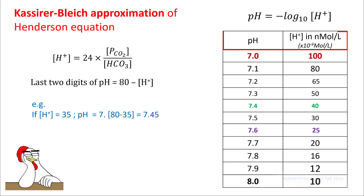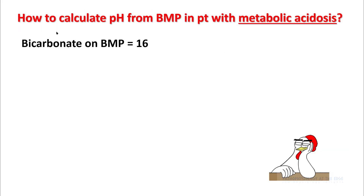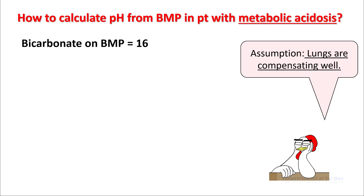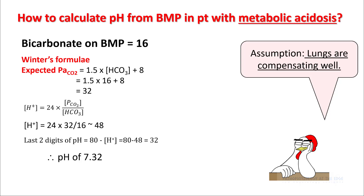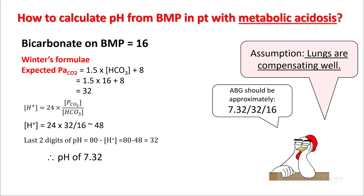You can also look at a reference table to figure out what hydrogen ion concentration corresponds to what pH. For example: your patient's bicarb on BMP is 16 and has some form of metabolic acidosis. If you assume that the lungs are compensating well, you should be able to figure out the expected PaCO2 from the Winter's formula, which gives you 32. You can use the previous equation to figure out the hydrogen ion concentration — in this case it's going to be 48 — and the pH will be 7.32. So the ABG should read approximately pH 7.32, PaCO2 of 32, and bicarb of 16.